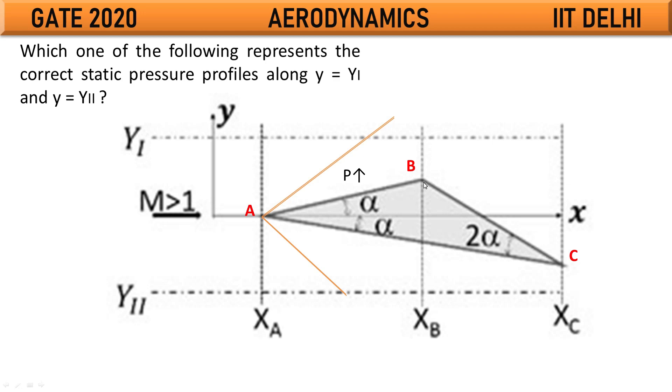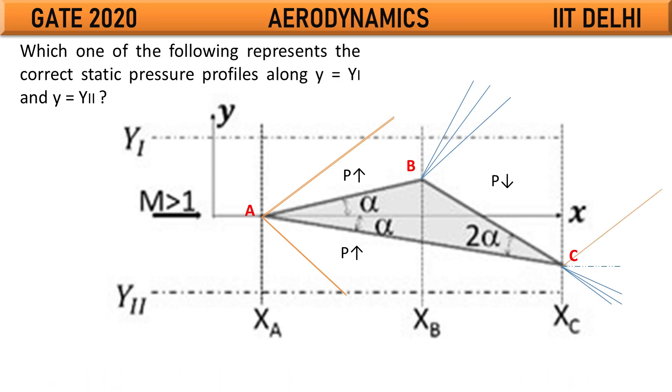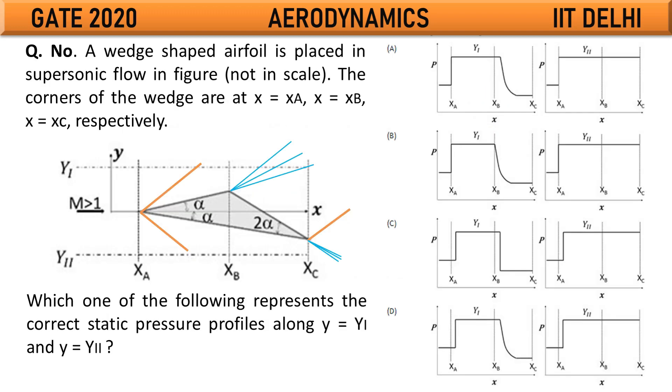This will lead to formation of an expansion shock wave. That is, the Mach number increases with gradual decrease in pressure and temperature across the expansion shock wave. Based on this concept, we can clearly observe the following curve which has been given as an option.